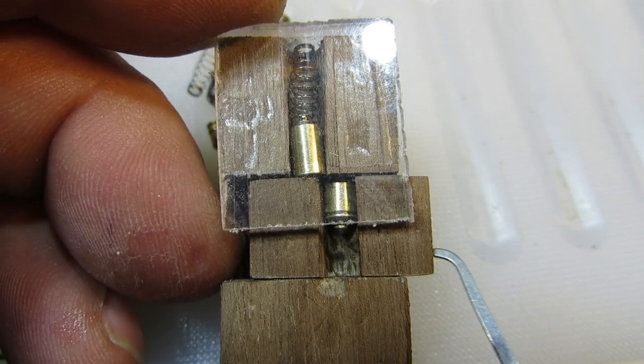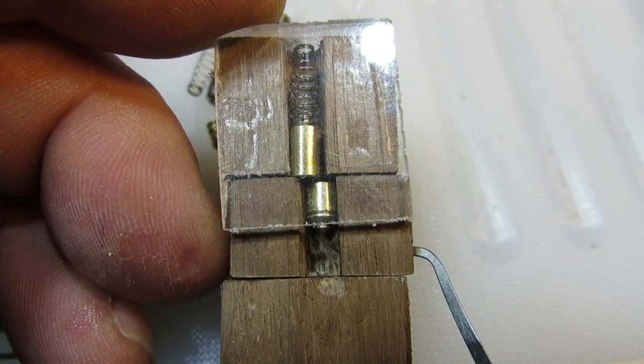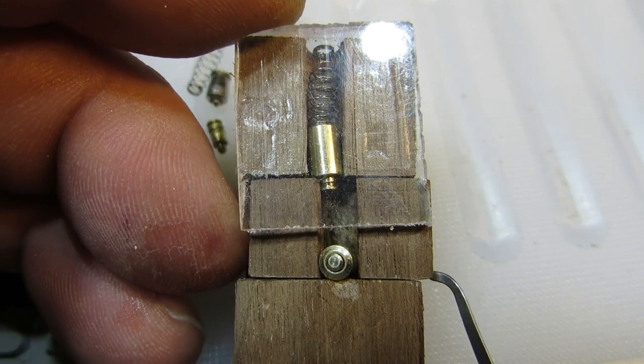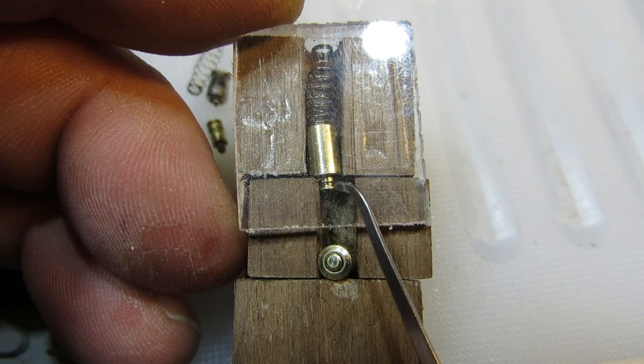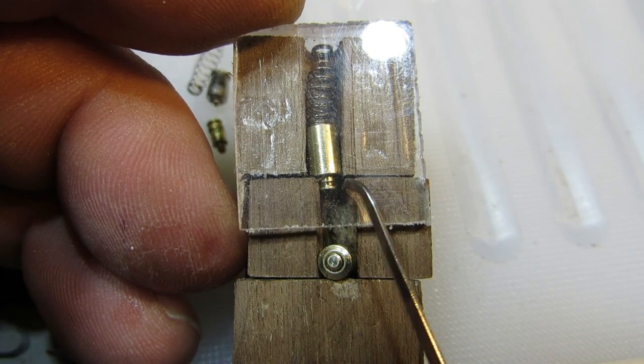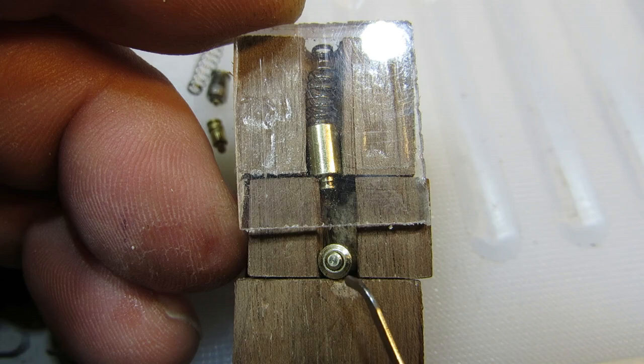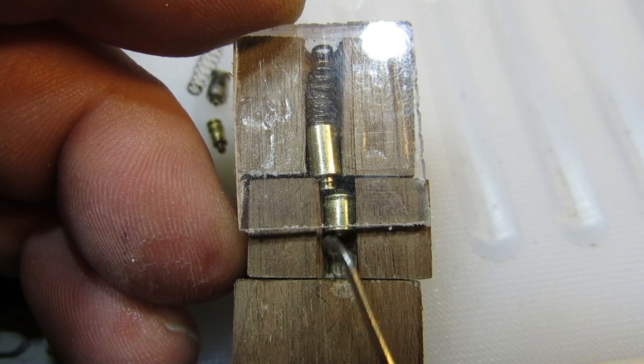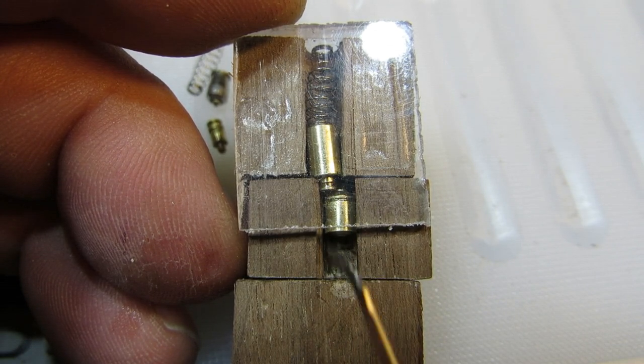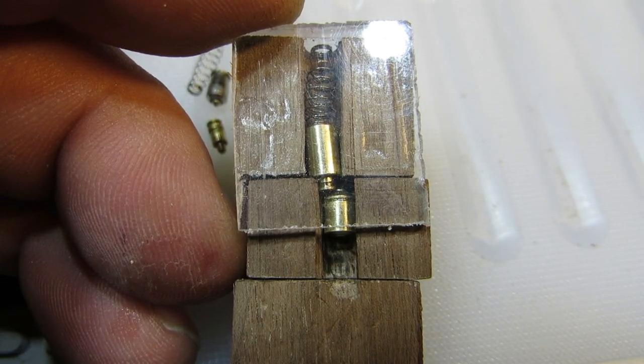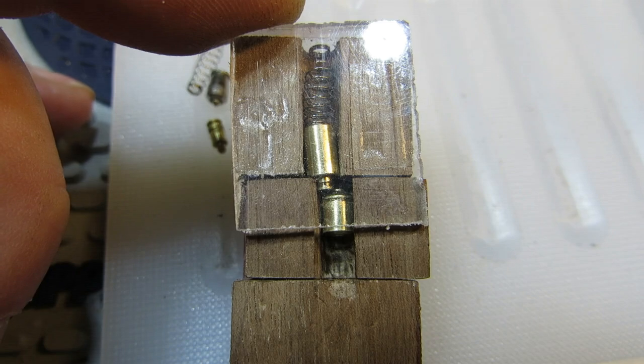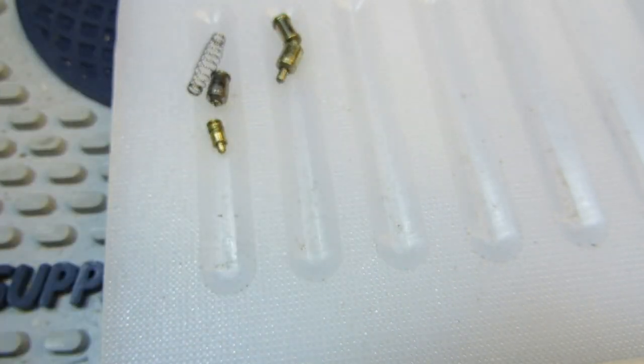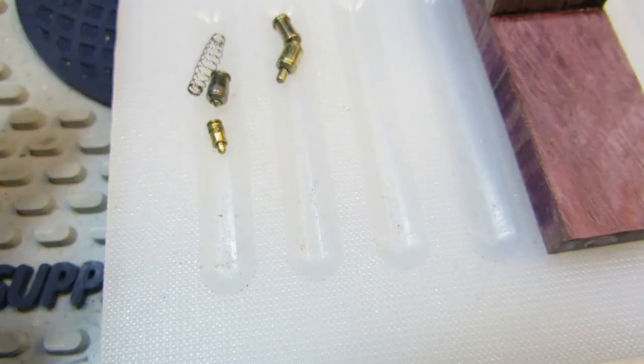So that happens when you get those very deep false sets in multi-locks. That's normally the sort of position you'll be in. You'll have one, maybe even two key pins, driver pins sat like so, and the inner pins might not pick them, which is why you end up picking an outer pin to finish off the picking.